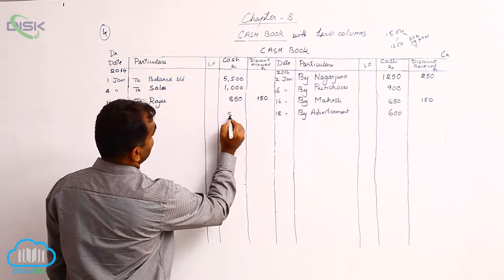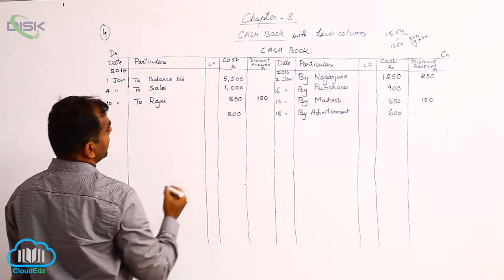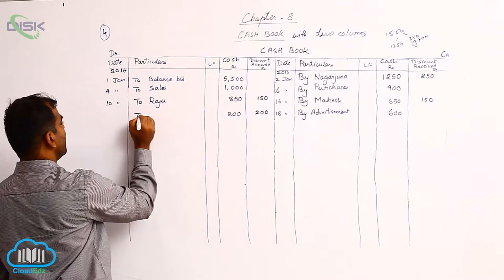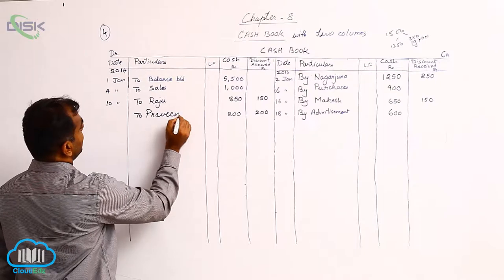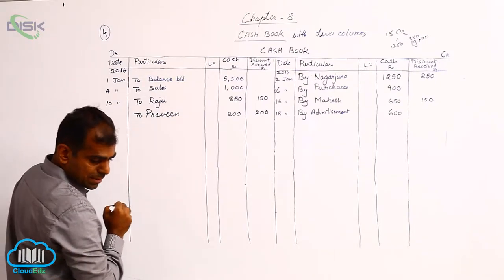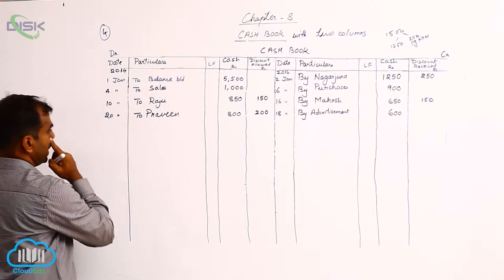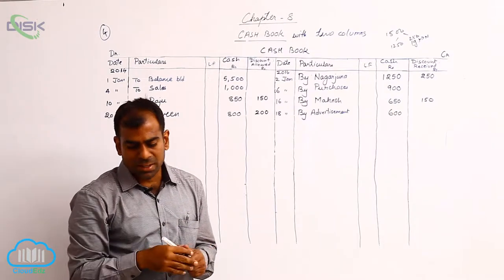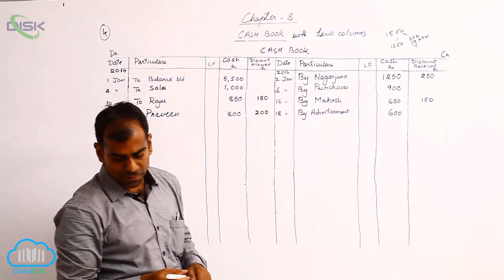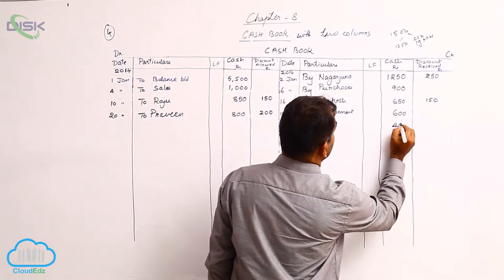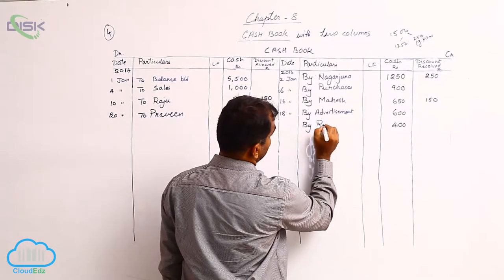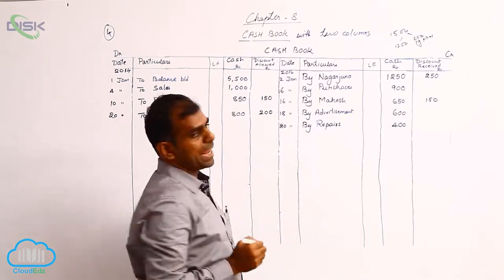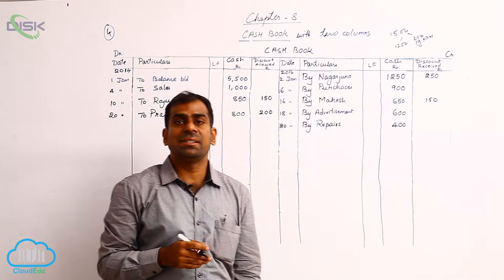On 20th January, received cash from Praveen 800, discount allowed 200. Enter 800 on the debit side in the amount column, and enter 200 in the discount allowed column. Record the name Praveen in the particulars column, date being 20th. On 24th January, paid for repairs — cash is going out, so enter 400 on the credit side, with the reason 'repairs', date being 24th.